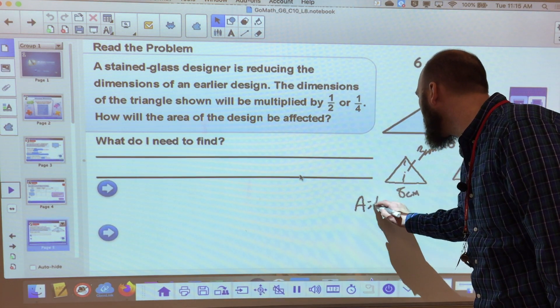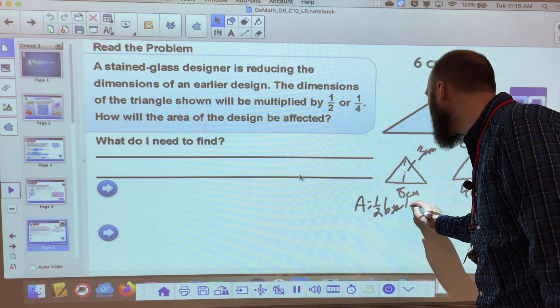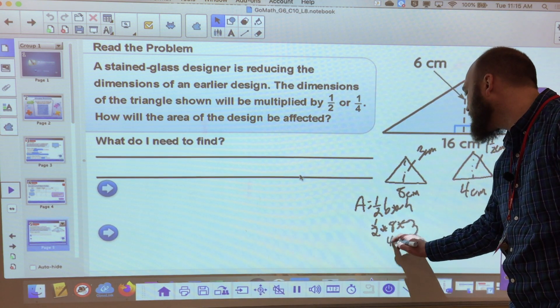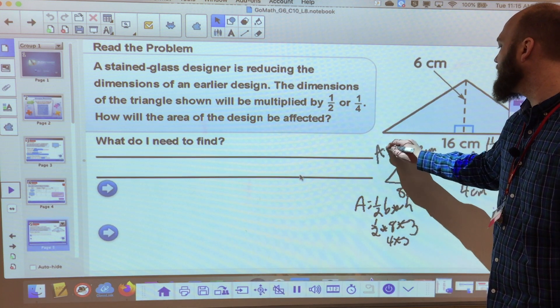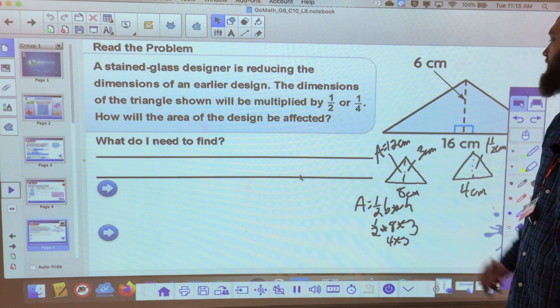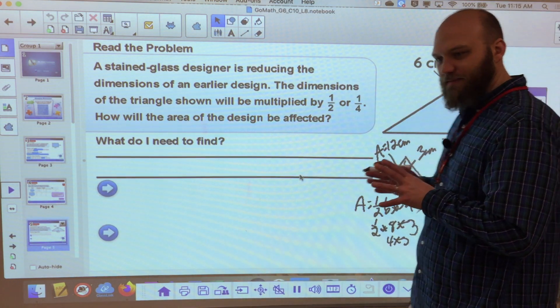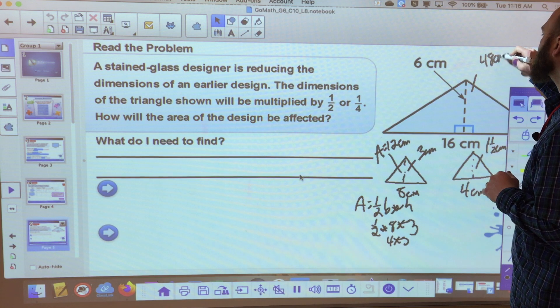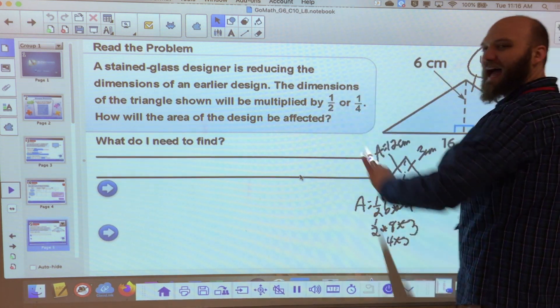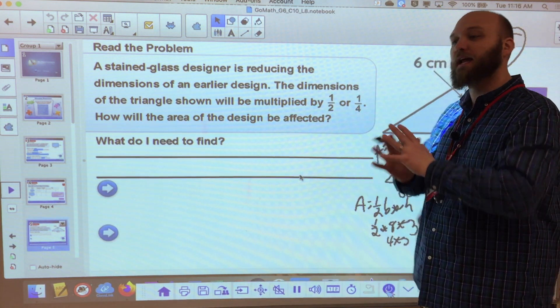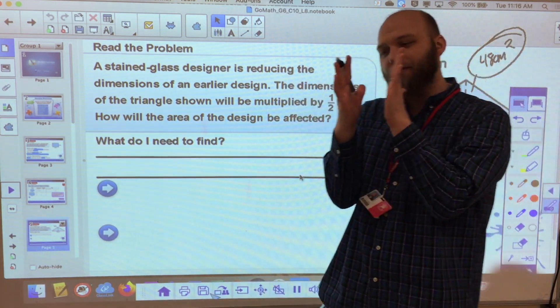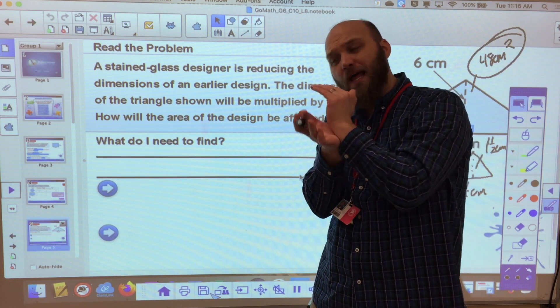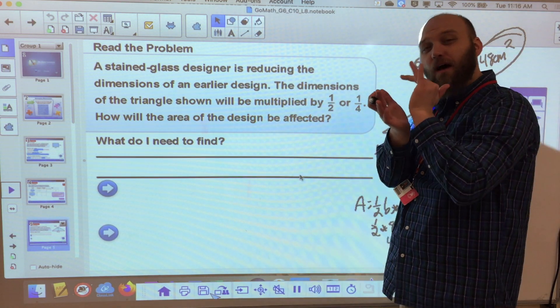And then solve the area there. So for example, area equals one half base times height or length times width. That's one half times eight times three or four times three. So the new area is 12 centimeters. Look at what we have here. If this was 48 centimeters and I cut it in half, I actually cut it to four times smaller because it's half the length and half the height. So it's one half squared. One half times one half. That's one fourth of the original shape.